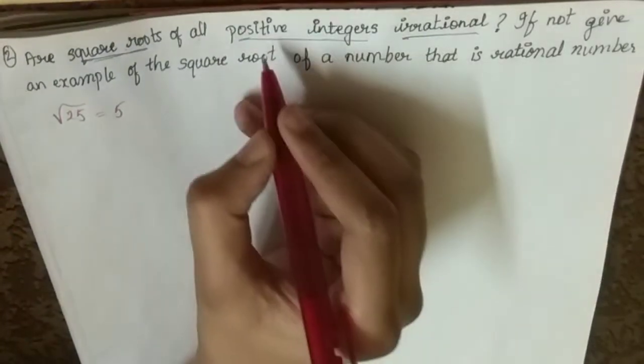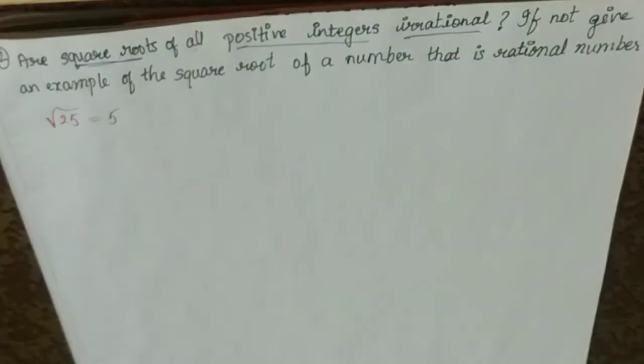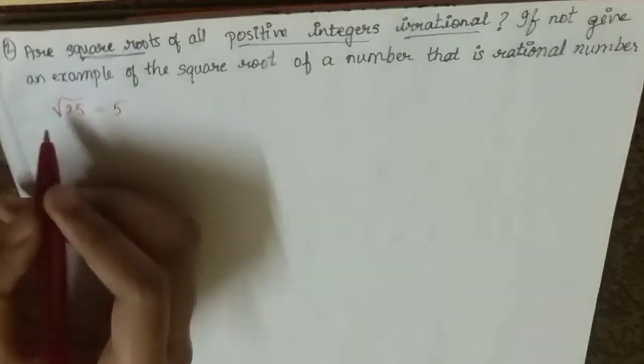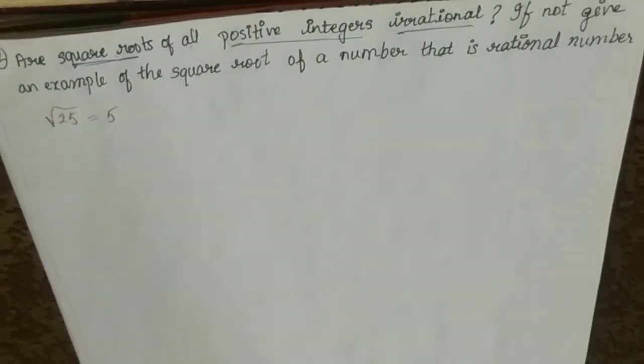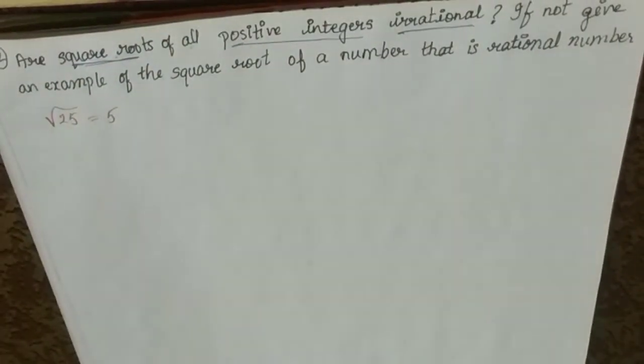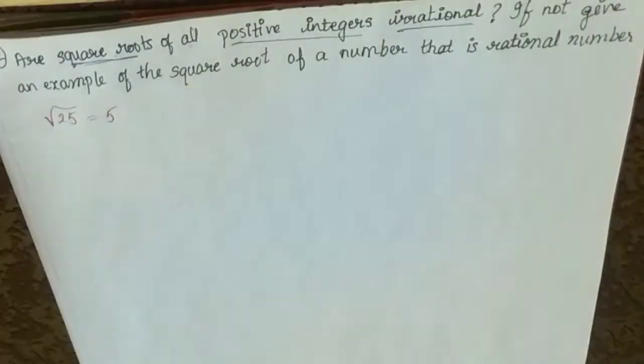Now, they are only discussing positive integers, because negative numbers don't have square roots in this standard. The question is asking if they are irrational.